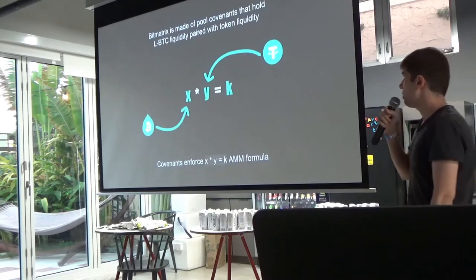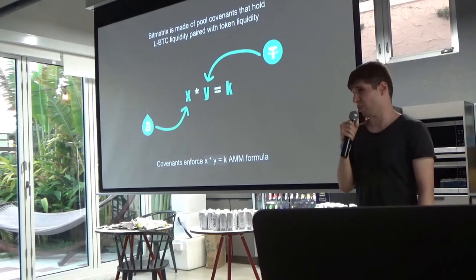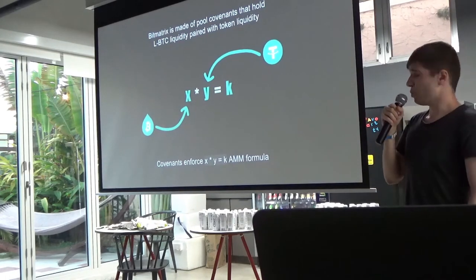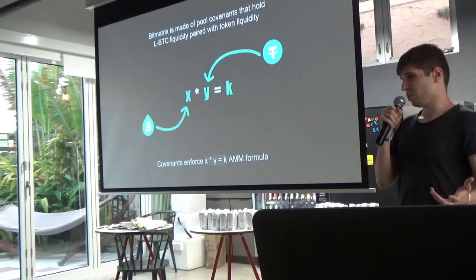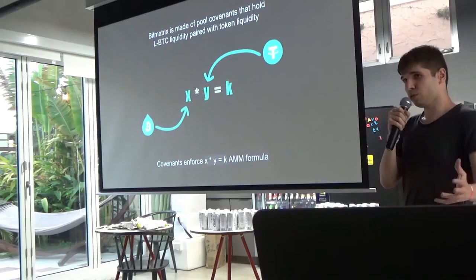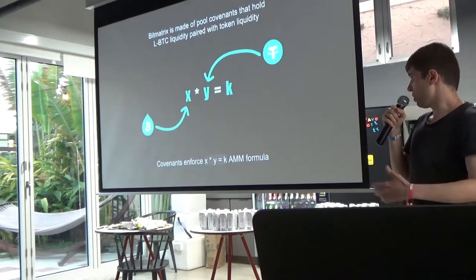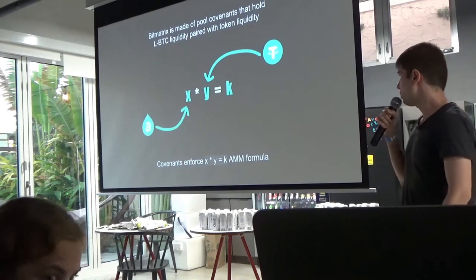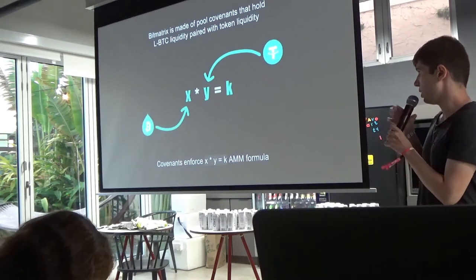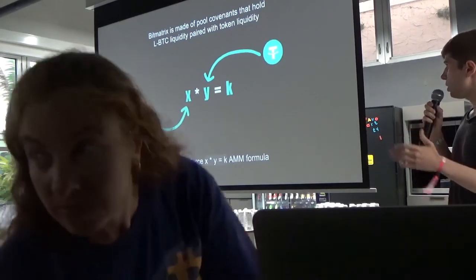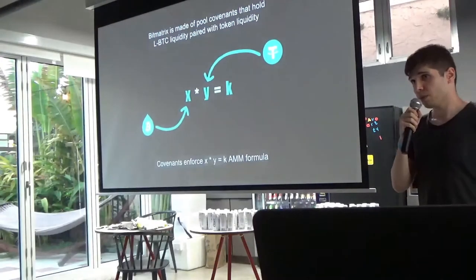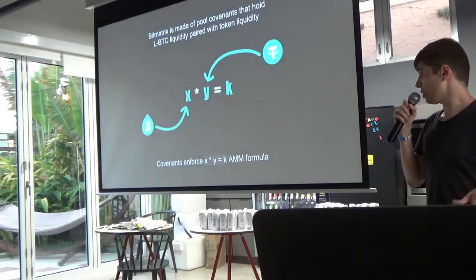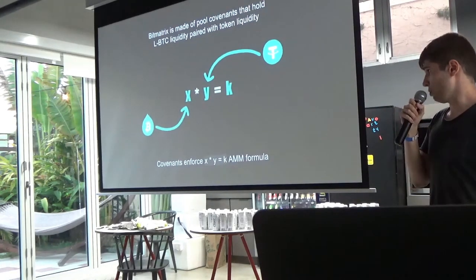BitMetrics is based on a concept called covenants. Covenants are smart contracts in Bitcoin terms — advanced Bitcoin script that can enforce rules and constraints. In our case, they enforce how a liquidity pool operates, including the constant AMM formula, to make sure the liquidity product remains the same unless someone is adding or removing liquidity.